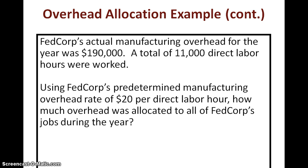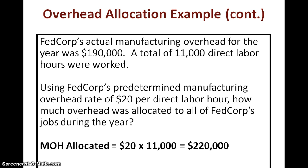A total of 11,000 direct labor hours were worked. The predetermined overhead rate is $20 an hour, so manufacturing overhead allocated would be 11,000 times $20, giving a total of $220,000 of manufacturing overhead allocated during the year.